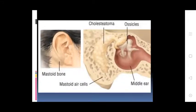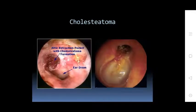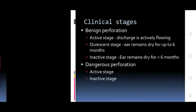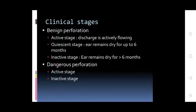Diagram shows: mastoid bone, mastoid air cells, middle ear and ossicles, cholesteatoma, attic retraction pocket with cholesteatoma formation, and the eardrum. Clinical stages — Benign perforations: Active stage — discharge present; following the quiescent stage, eardrum remains dry for up to 6 months. Inactive stage — eardrum remains dry for less than 6 months.